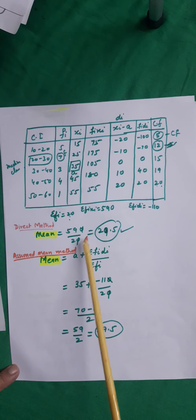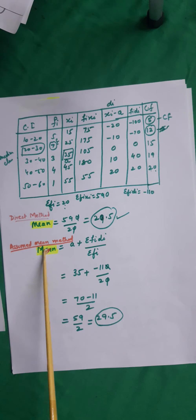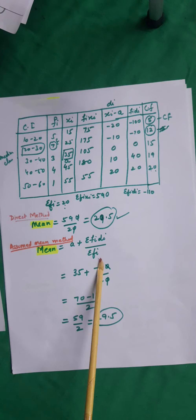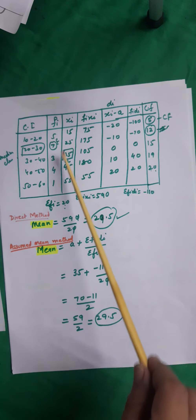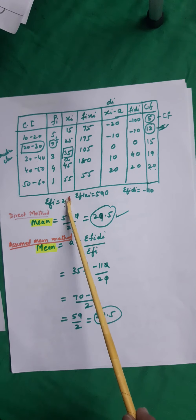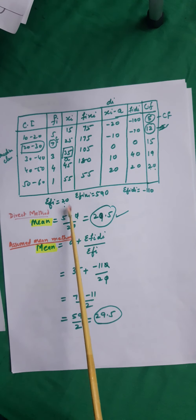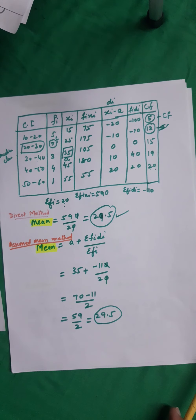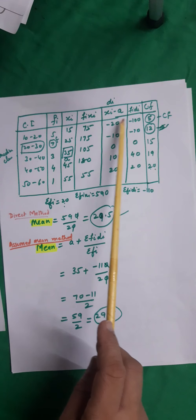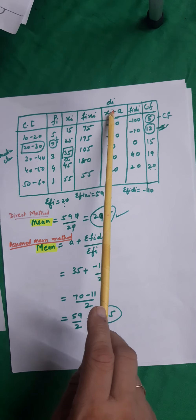Now let us find the mean by the assumed mean method. Mean equals A plus sigma(FI·DI) upon sigma(FI). A is the assumed mean, taken as the middle value of the XI's. Here XI values are 15, 25, 35, 45, 55, so A equals 35 — the middle term. DI is the deviation of the class mark from the assumed mean: DI equals XI minus A.